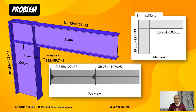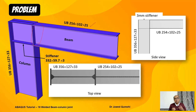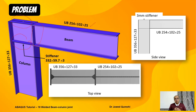The problem to solve today: universal beam UB 254×102×25 is connected with column section UKB 356×127×33. The beam and column are welded at this point. For these kinds of joints it is quite common practice to weld a stiffener at these locations so that there is no buckling in the web of the column. The stiffener size is 332×59.7×3.